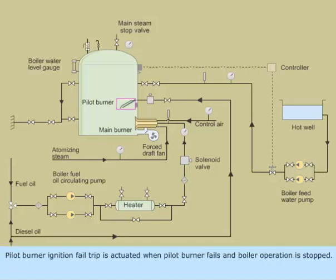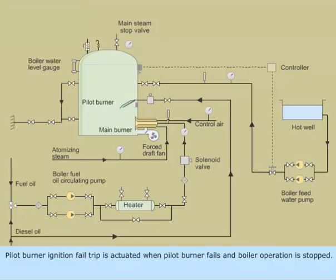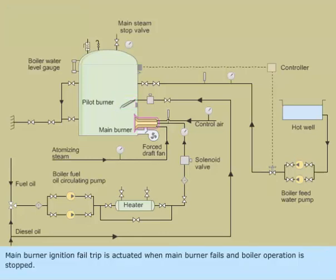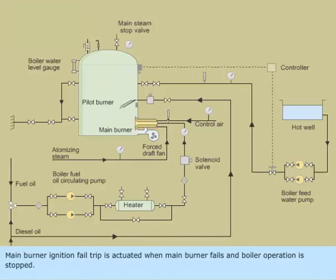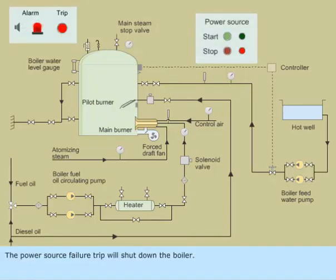Pilot Burner Ignition Fail Trip is activated when the pilot burner fails and boiler operation is stopped. Main Burner Ignition Fail Trip is activated when the main burner fails and boiler operation is stopped. The Power Source Failure Trip will shut down the boiler.